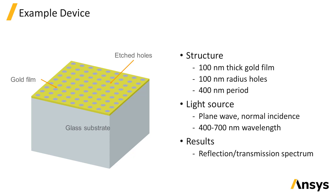The thickness of the gold film and the radius of the holes etched into the gold layer are both 100 nanometers, which is sub-wavelength. For this structure, we will use the Finite Difference Time Domain, or FDTD, method to simulate the device's performance. But what is the motivation for running a simulation in the first place?